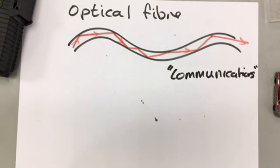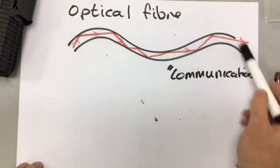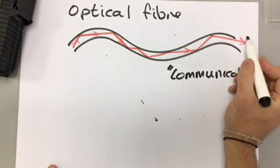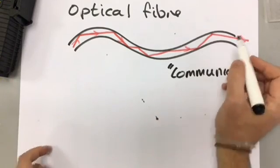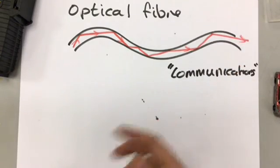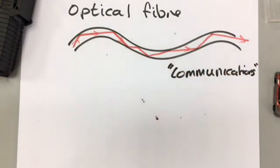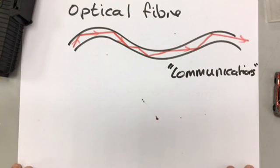The second use for total internal reflection is in medical uses. They use it in exactly the same way, but instead of transmitting internet, there is a little camera at one end. They put it inside your body. The fibre can bend because the light can't escape — it is totally internally reflected. This allows a doctor to look inside your body to see if there are any problems with your organs or blood vessels.